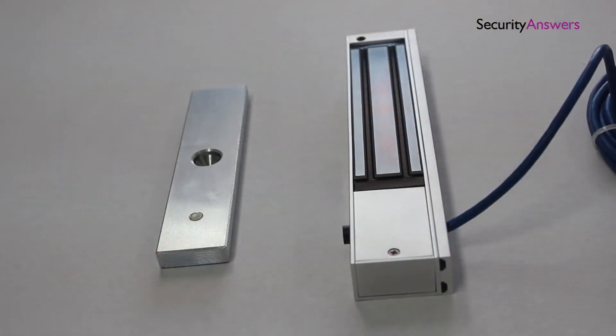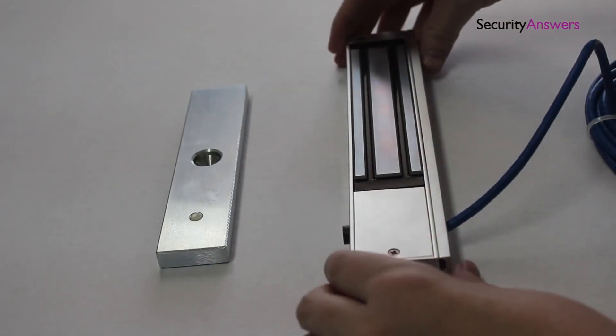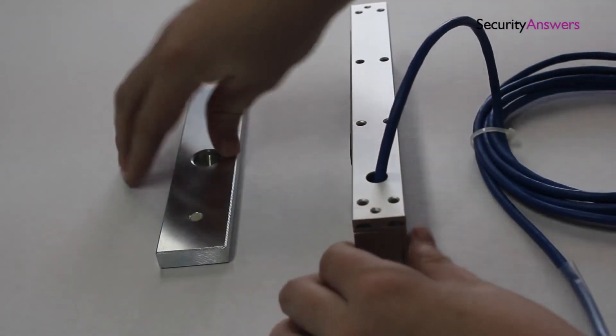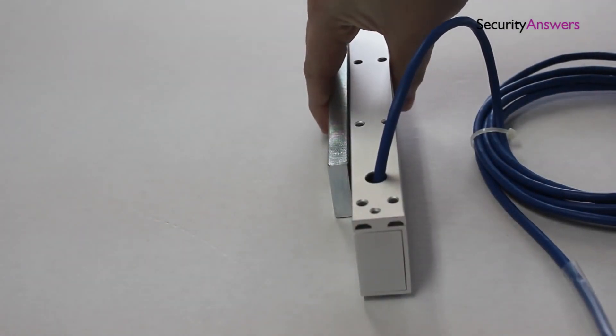In order for an EM lock to function, it's extremely important that a thorough connection is made between the two magnets. So take extra care when marking off the area for the second device to guarantee correct alignment.